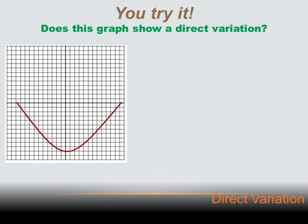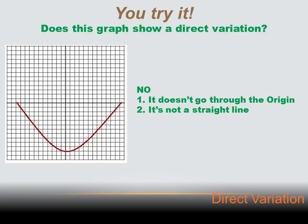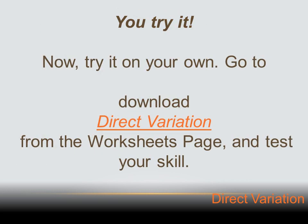Does this graph show a direct variation? No. Number one, it doesn't go through the origin — the graphing of a direct variation has to go through the origin, and this just avoids the origin. And secondly, it's not a straight line — it curves. All direct variations are straight lines. Well, that's our lesson on direct variation. Go to www.mastermath.info and download the direct variation worksheet and practice what you've been learning. Then go back to mastermath.info and take the quiz on direct variation. Be sure to come back and see us again real soon.